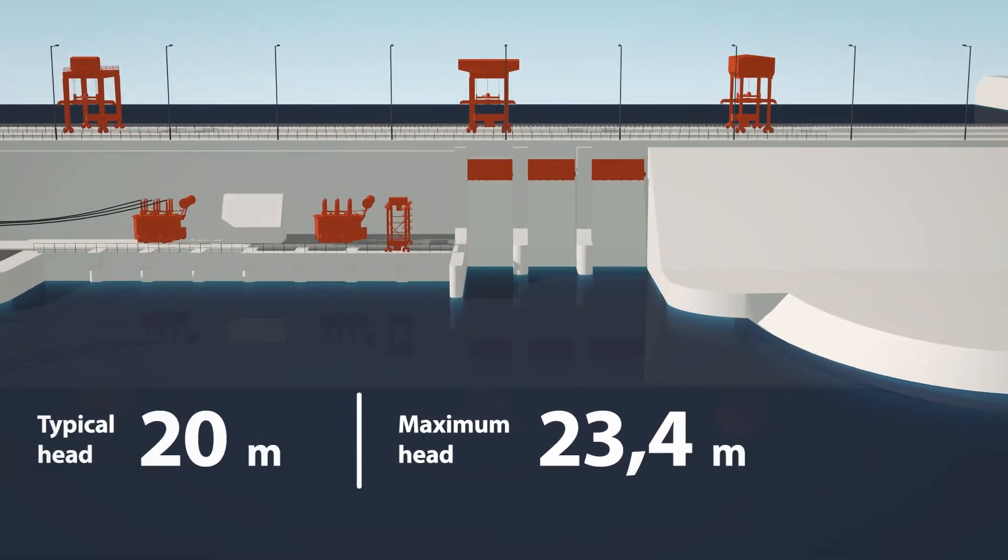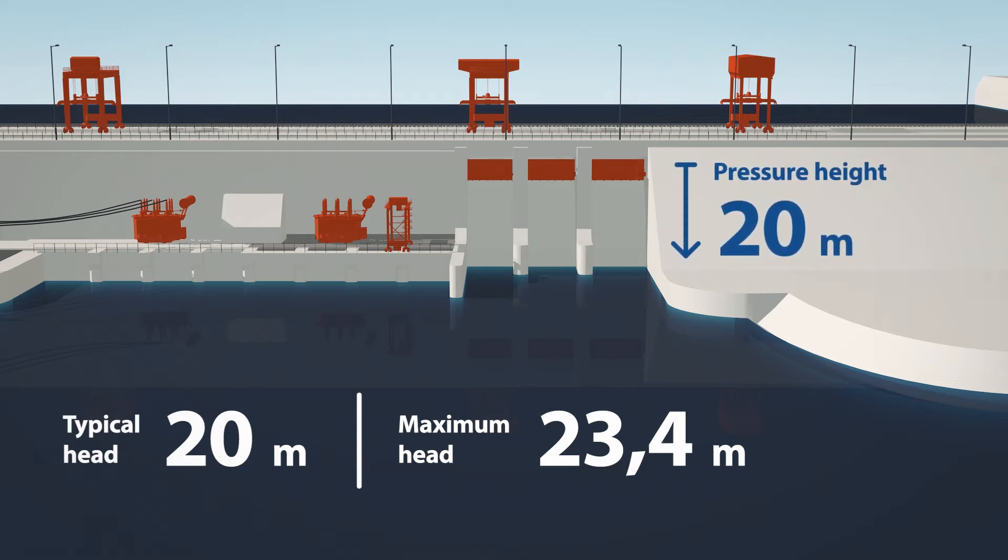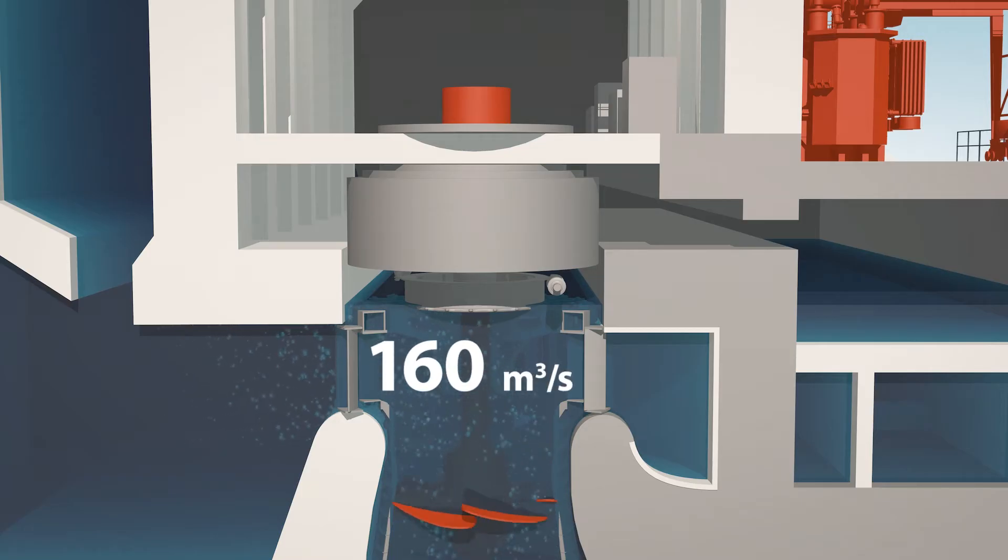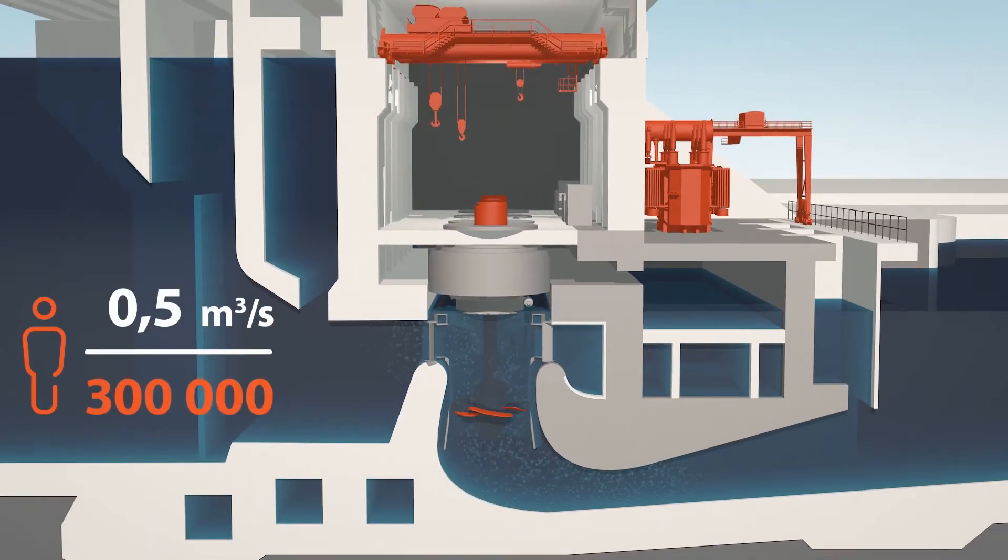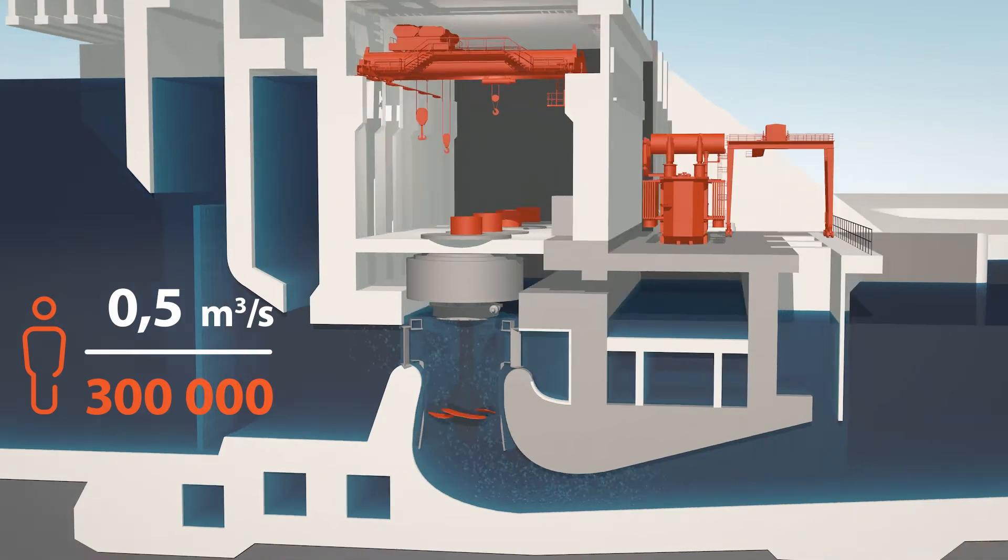The dam's maximum water depth is more than 23 meters, and when the floodgates are raised, the water gushes down from a height of 20 meters. As much as 160 cubic meters of water pass through each of the power plant's four turbines per second. In comparison, all of Kaunas' more than 300,000 residents together do not even use half a cubic meter of water per second.